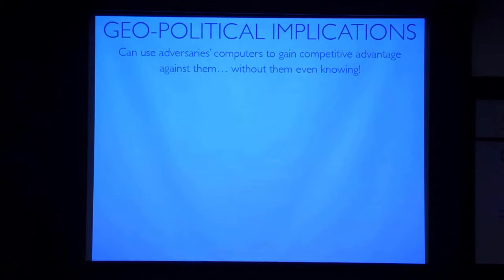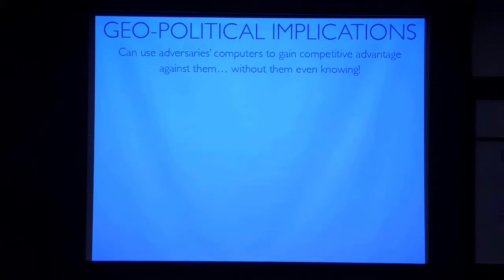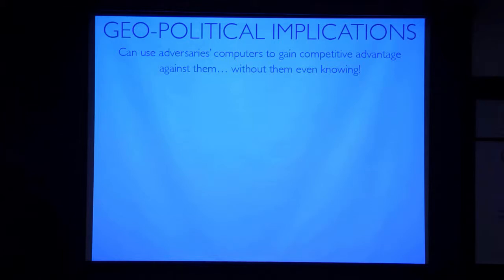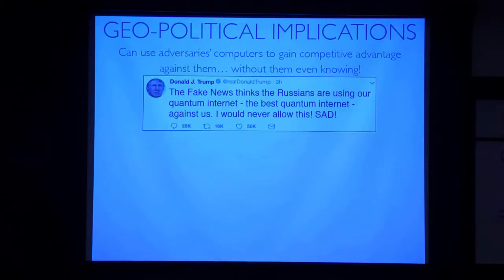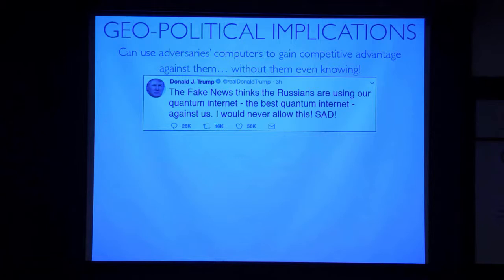There are also big geopolitical implications. I can rent out compute time on someone else's computer and potentially use it against them — and because I can do homomorphic encryption, they wouldn't even know. Here's what might happen: a Russian bedroom hacker with very limited resources outsources Shor's factoring algorithm to United States servers, uses the computation to hack United States financial systems, and the Americans won't even know. Then he gets the results back. It's a very adversarial scenario.